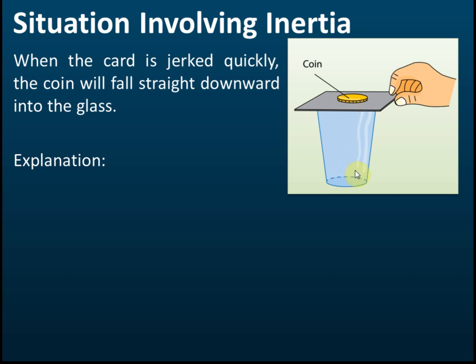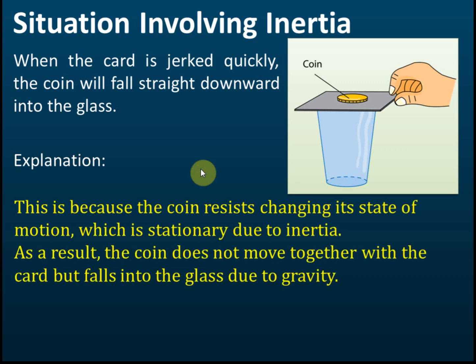In the exam, you need to explain why this happens. The suggested answer: this is because the coin resists changing its state of motion, which is stationary, due to inertia. Because of inertia, the coin wants to remain stationary — the concept of inertia states that any object will tend to resist attempts to change its state of motion. So the coin resists changing its state, which is stationary.